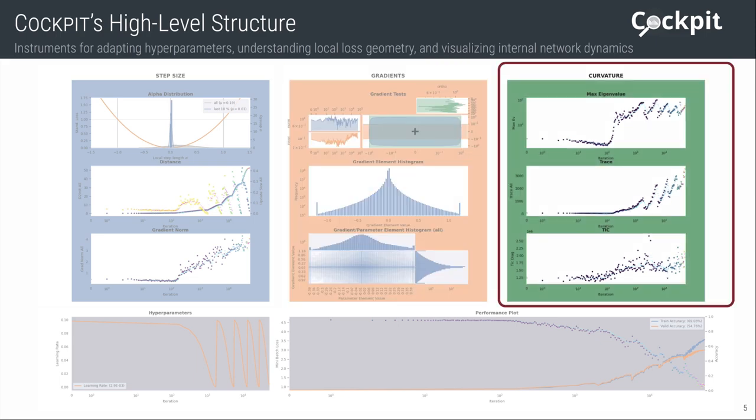And last but not least, the right column displays curvature information about the loss landscape, so second-order information.